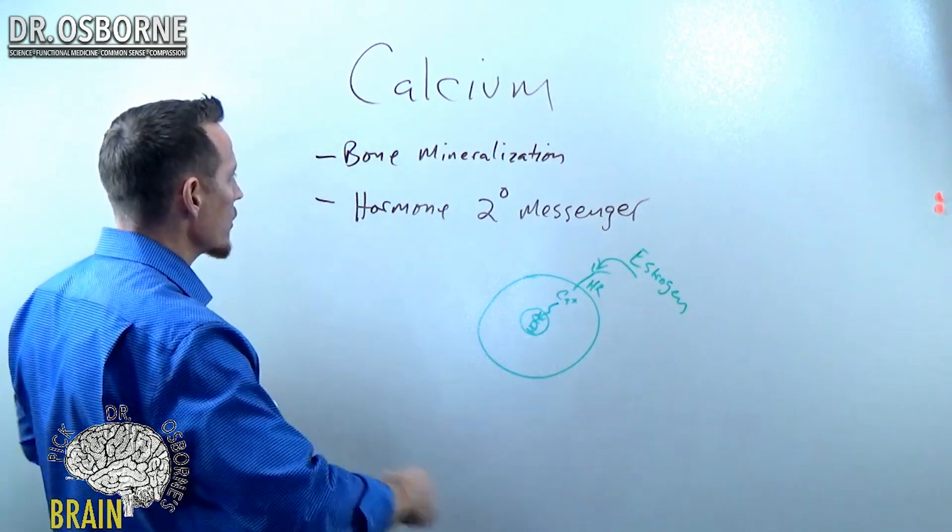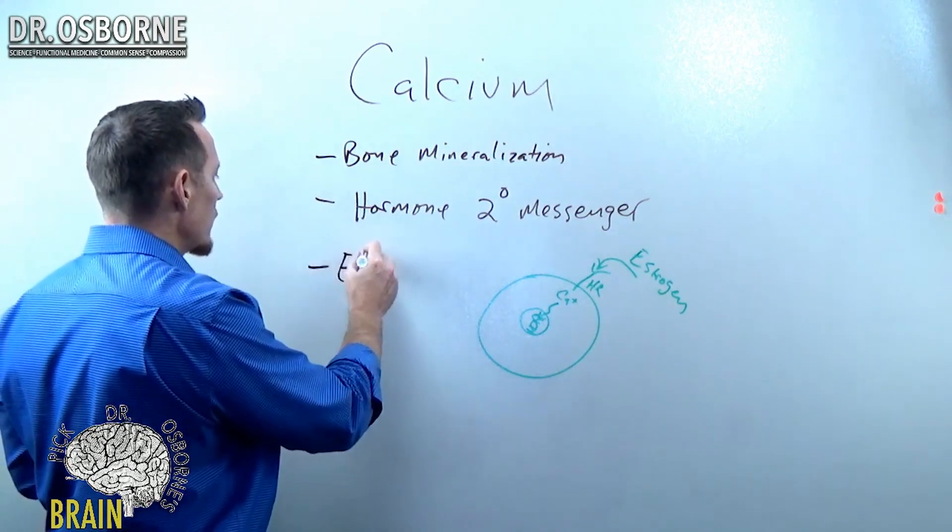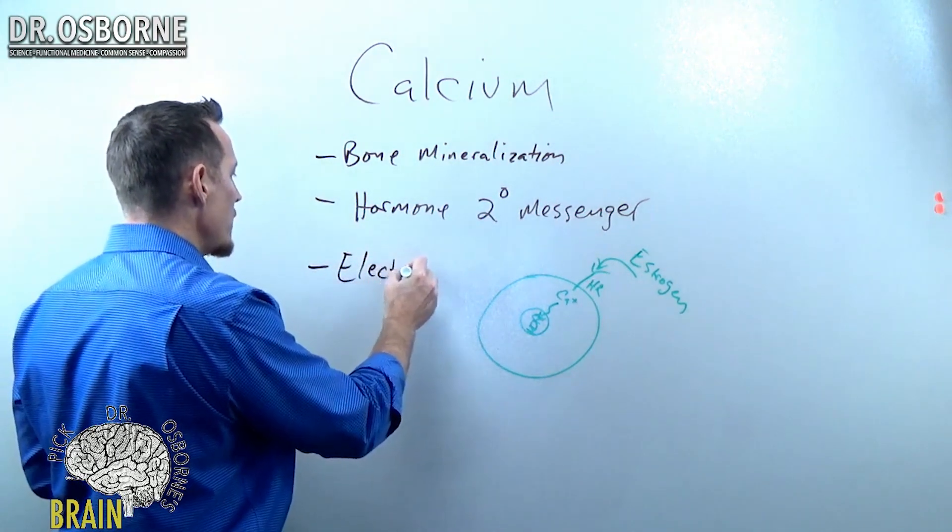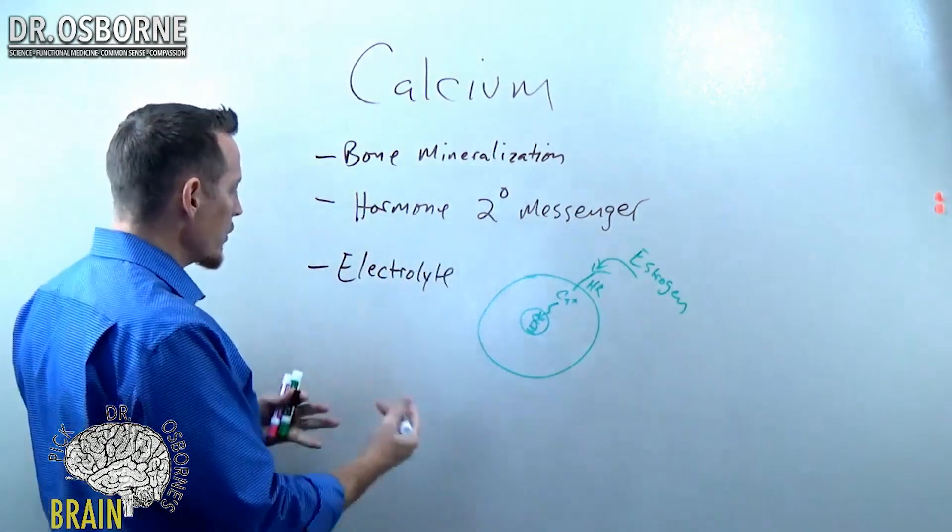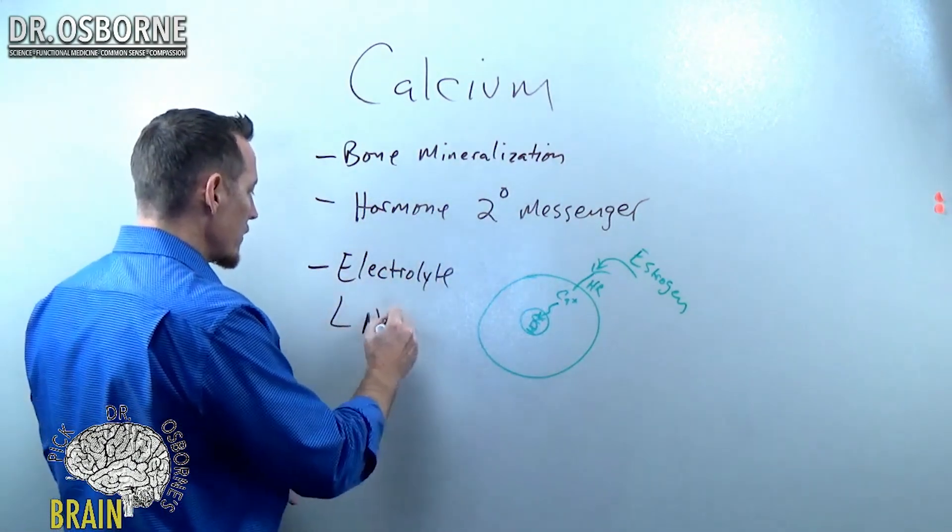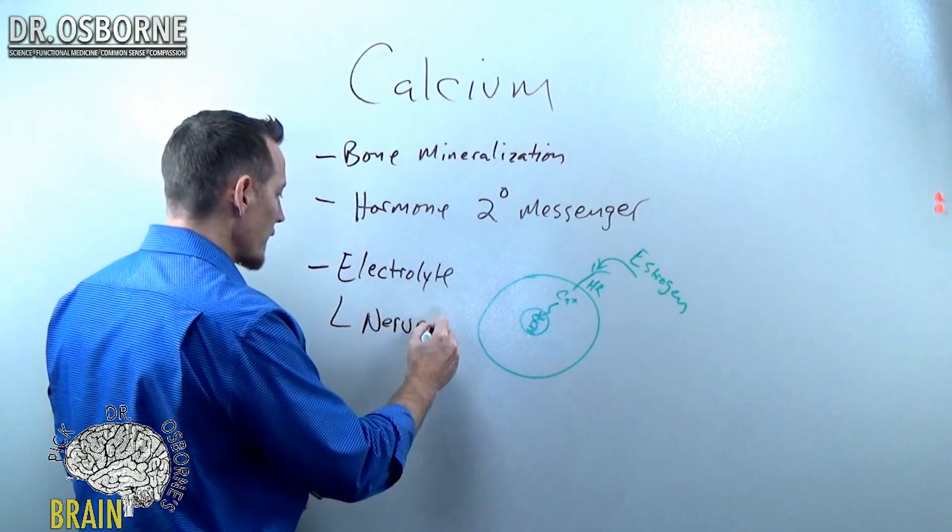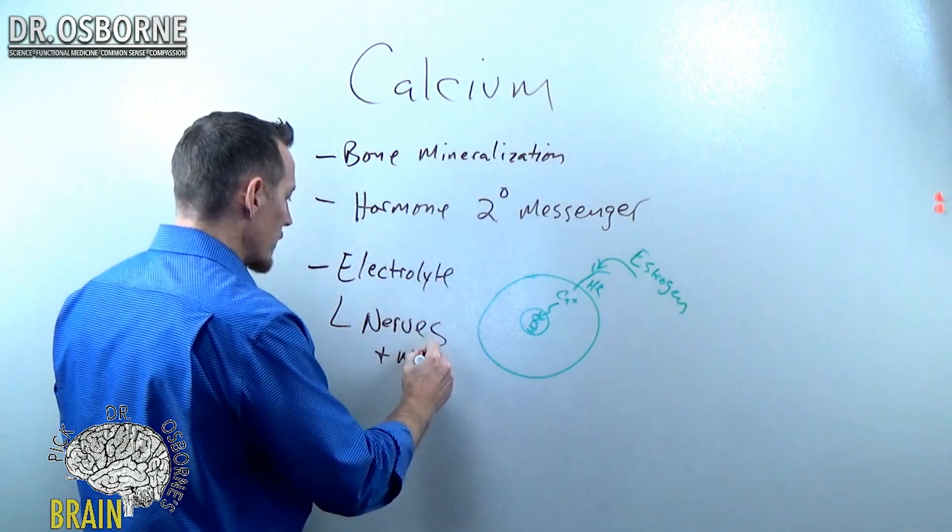One of the other functions of calcium is it's an electrolyte. Now, it's funny, you never see or hear about calcium as an electrolyte, but it plays a role in nerves and muscle function.